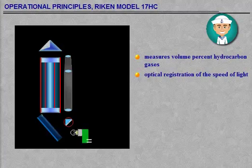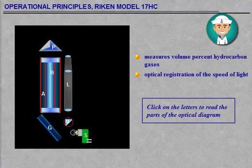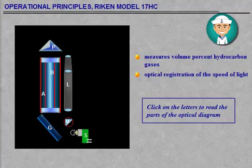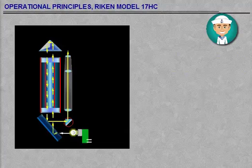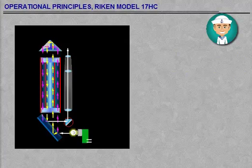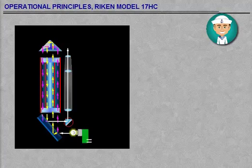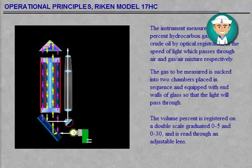The instrument measures volume percent hydrocarbon gases above crude oil by optical registration of the speed of light, which passes through air and gas mixture respectively. The gas to be measured is sucked into two chambers placed in sequence and equipped with end walls of glass so that the light will pass through. The volume percent is registered on a double scale graduated 0–5 and 0–30, and is read through an adjustable lens.